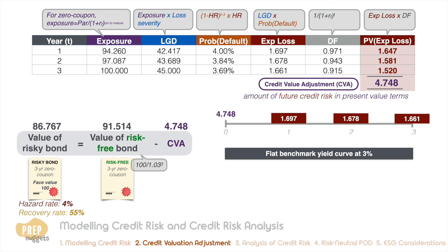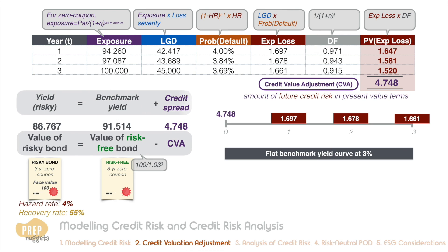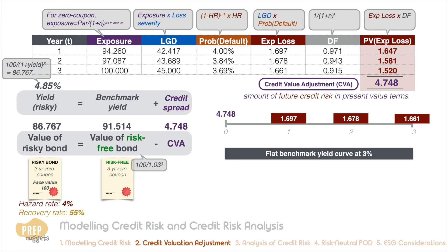CVA can also be expressed as a credit spread. Based on the price of 86.767 for the risky bond, the yield of the bond would be 4.85 percent. Since the benchmark rate is three percent, the credit spread must be 185 basis points.